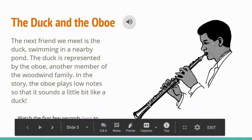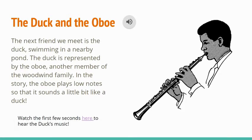The next character we meet in the story is a duck, who happens to be swimming in a nearby pond when we meet her in the story. The duck is represented in the music by the oboe, which is another member of the woodwind family.